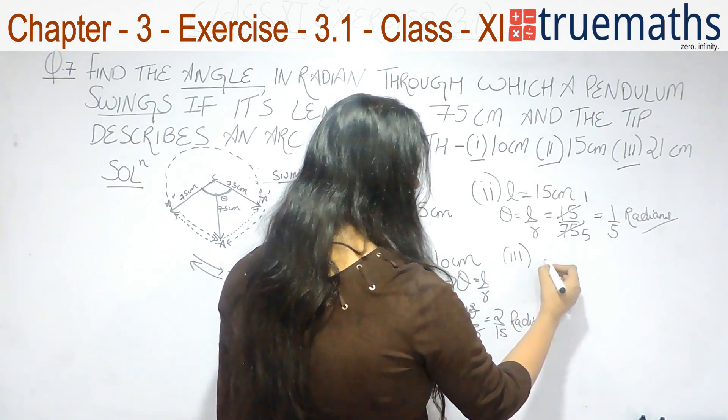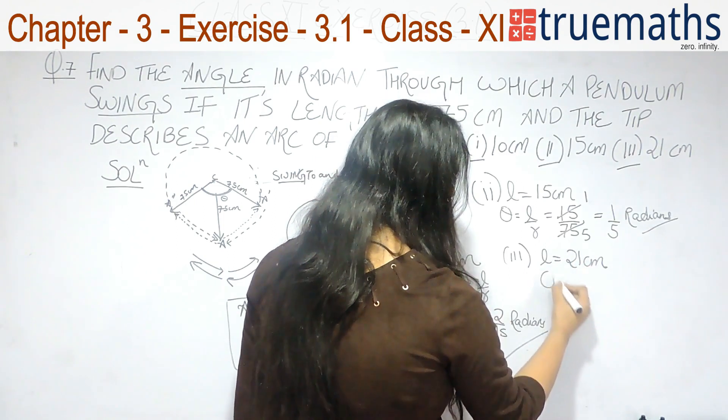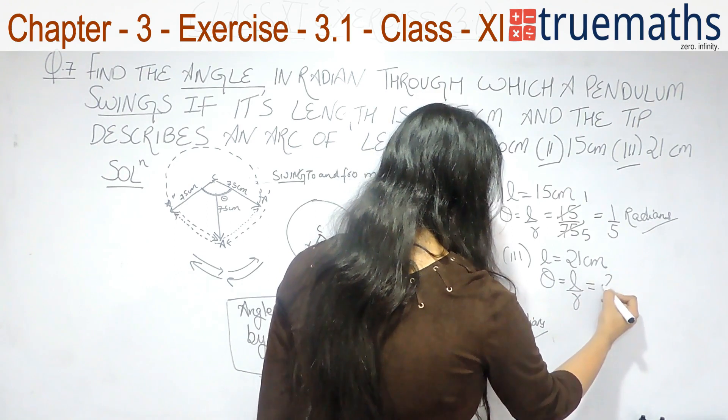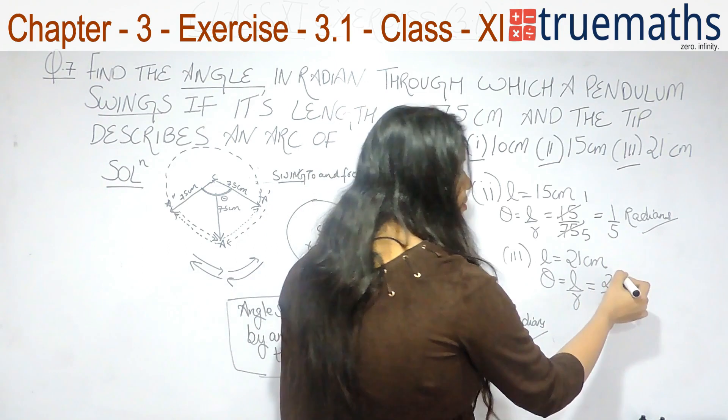Now, the third part is when L value is 21 cm. So, theta will be L by R. That is, L is 21 and R is 75. It gets cancelled by 3.